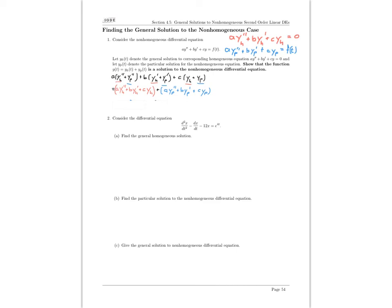Now notice that the stuff in red over here - since y sub h was a homogeneous solution that we saw over here - all of that red stuff gives me 0. And all of this blue stuff over here gives me the forcing function f(t).